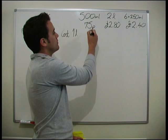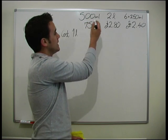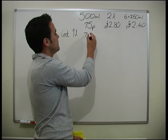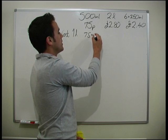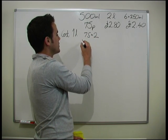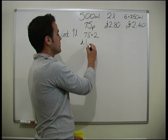So 500ml, what do we need to do to get 500ml to 1L? We times it by 2. So we do 75p times by 2, which gives us £1.50.